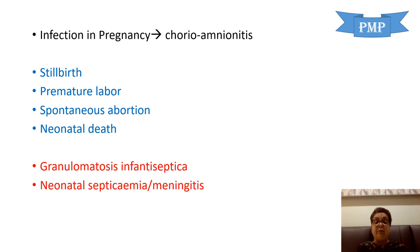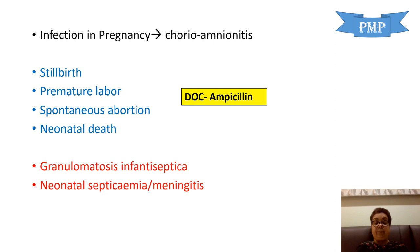Sometimes the child may survive but develop a very severe disease called granulomatous infantiseptica, characterized by multiple visceral abscesses as well as skin pustules. Perinatal or in-utero transmission can lead to neonatal septicemia as well as neonatal meningitis, classified as early onset (due to in-utero infection) and late onset (due to perinatal transmission). Drug of choice for treatment of Listeria infections is ampicillin; in penicillin-allergic patients, cotrimoxazole can be given.